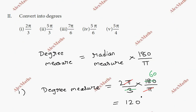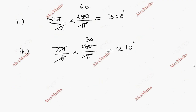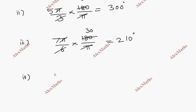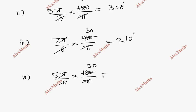Fourth subdivision: 5π/6. So 5π/6 into 180/π. The π cancels. 180 divided by 6 equals 30. So 5 times 30 equals 150 degrees. So 5π/6 equals 150 degrees.